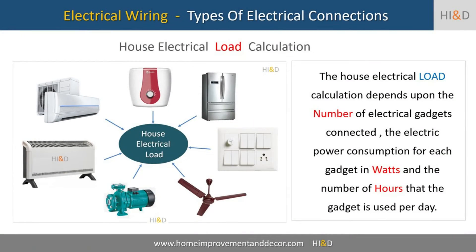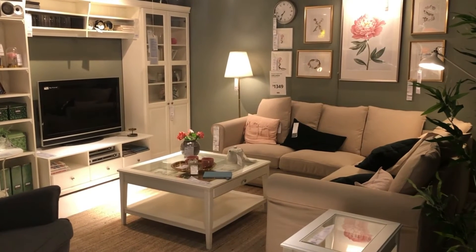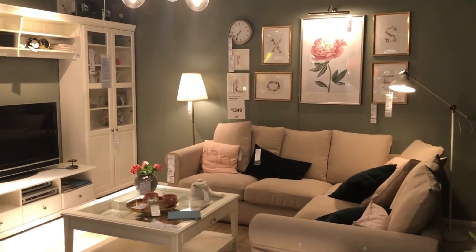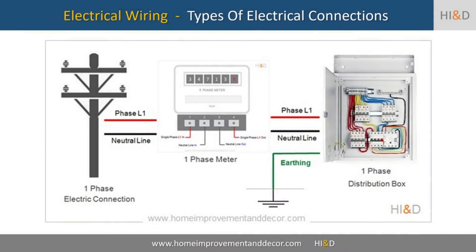The power load, or in other words the estimated peak demand of electricity, depends upon the number of electrical gadgets connected to the house electricity connection. Therefore, the electrical load calculation for each room must be done at the planning stage. Now that you have understood the basic knowledge about the working of the house electrical system, let us discuss some important terms used regarding the house wiring system that will help you understand the electrical connection types.